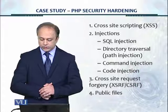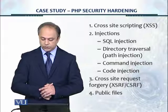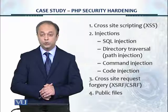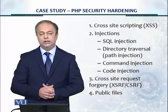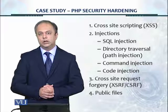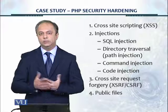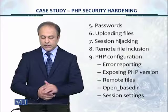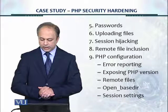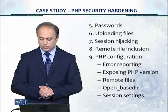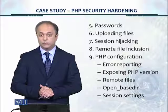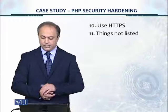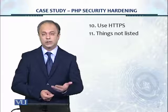There are about nine or ten controls recommended by PHP Earth. These include: cross-site scripting; injections — SQL, directory traversal, command injection, and code injection; cross-site request forgery; public files; passwords; uploading files; session hijacking; remote file inclusion; PHP configuration (including error reporting, exposing PHP versions, remote files, open base directory, and session settings); HTTPS; and miscellaneous items. Most of these align with the OWASP Top 10 vulnerabilities in web applications.